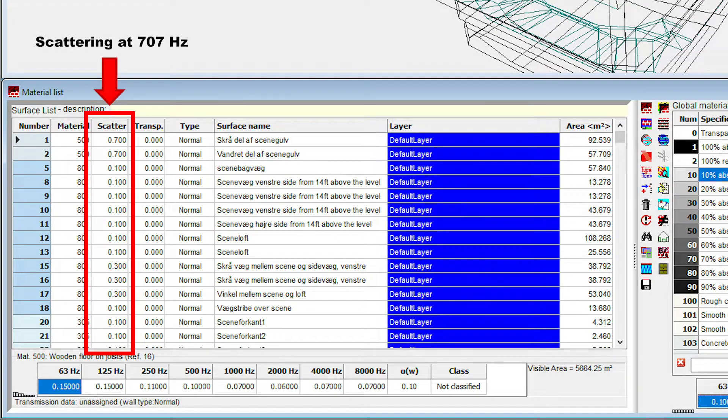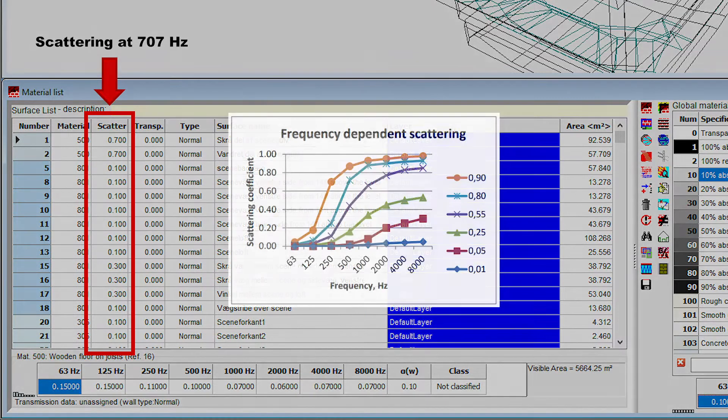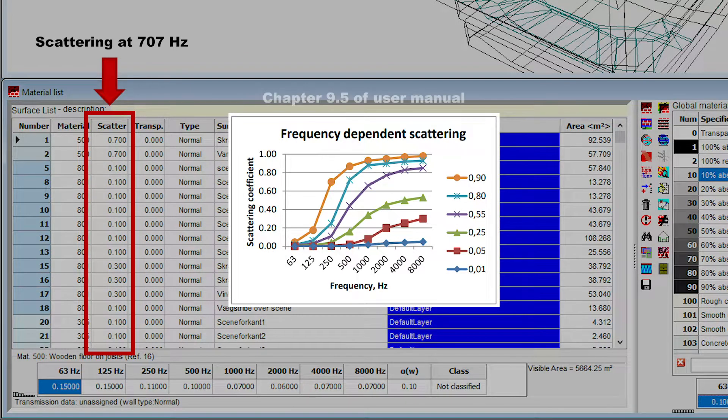In ODEON, this number will be the scattering at 707 Hz, which is the logarithmic average between 500 Hz and 1 kHz. From this number, the scattering at all frequency bands will be estimated based on known curves, which are shown in chapter 9.5 of our user manual.